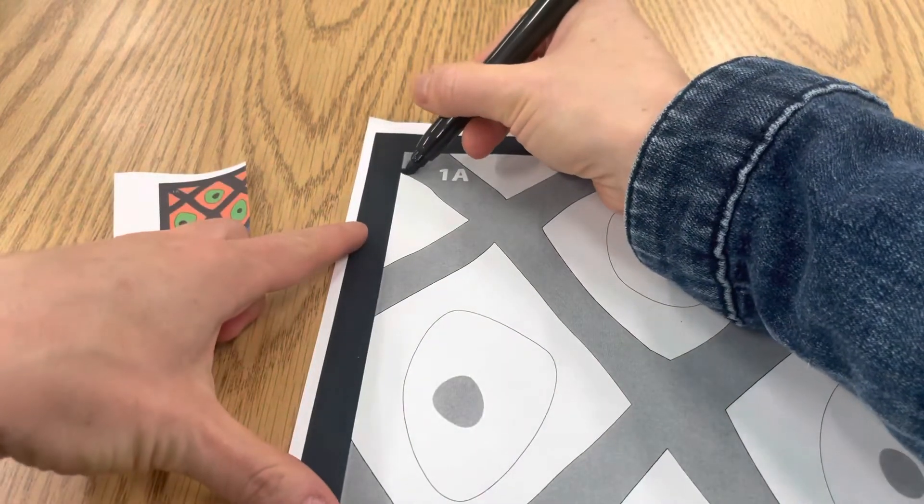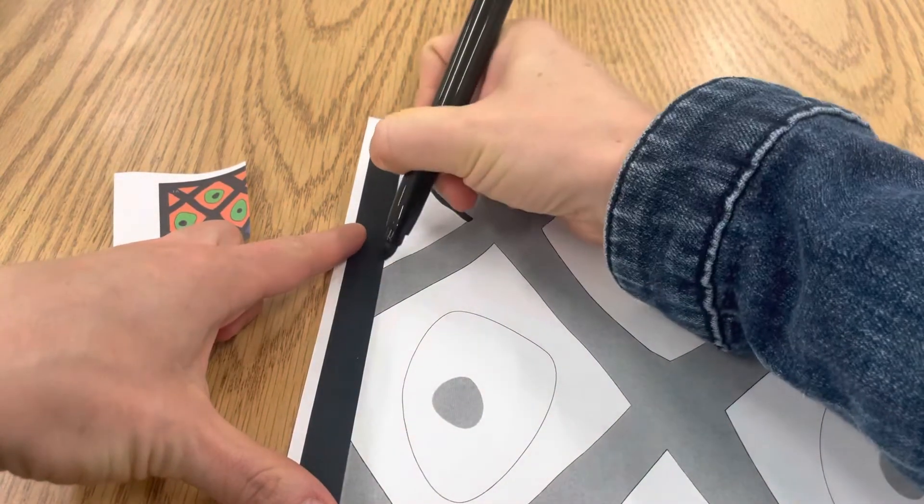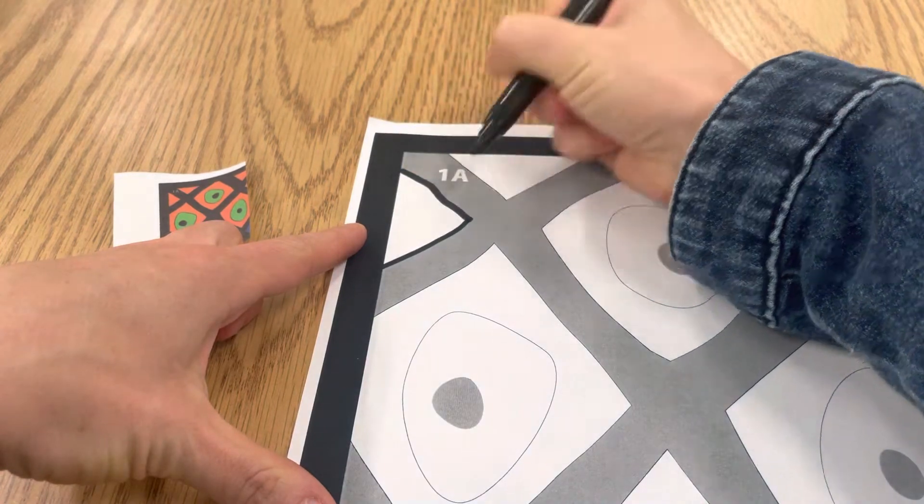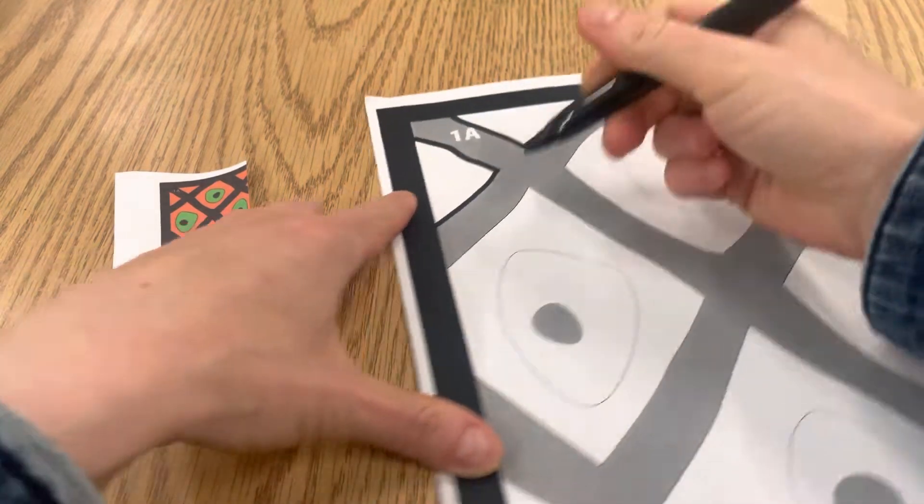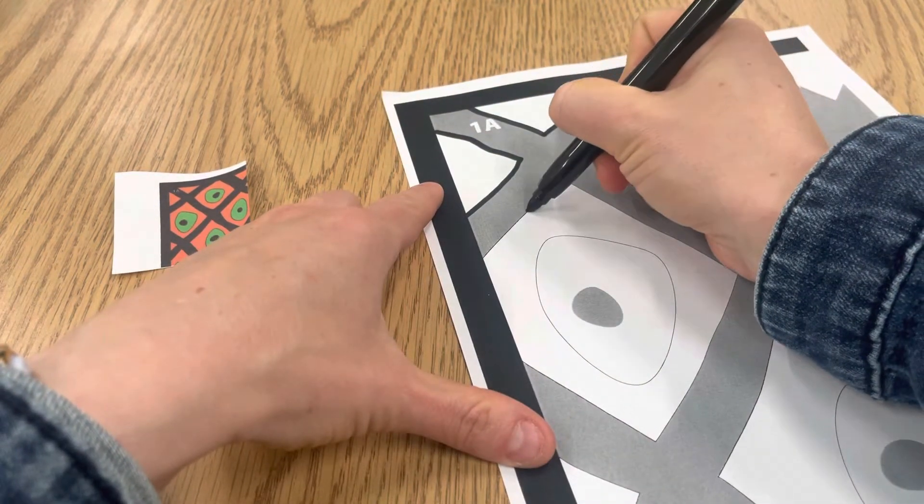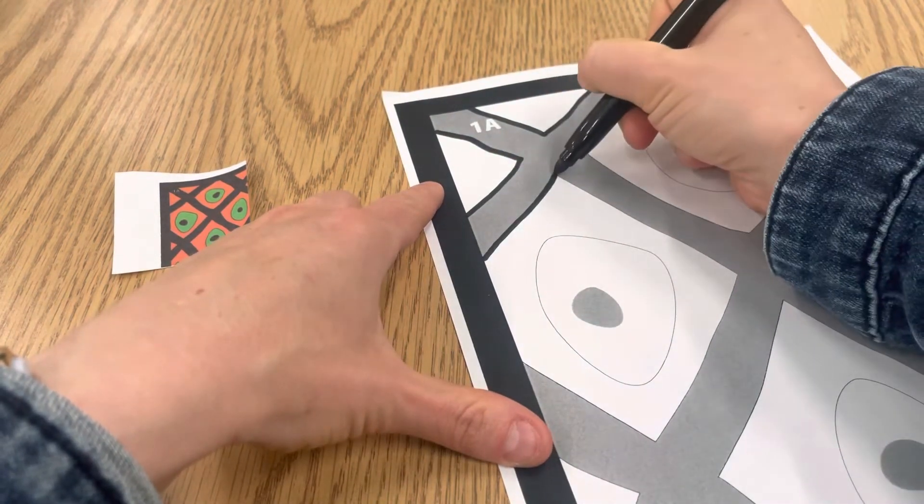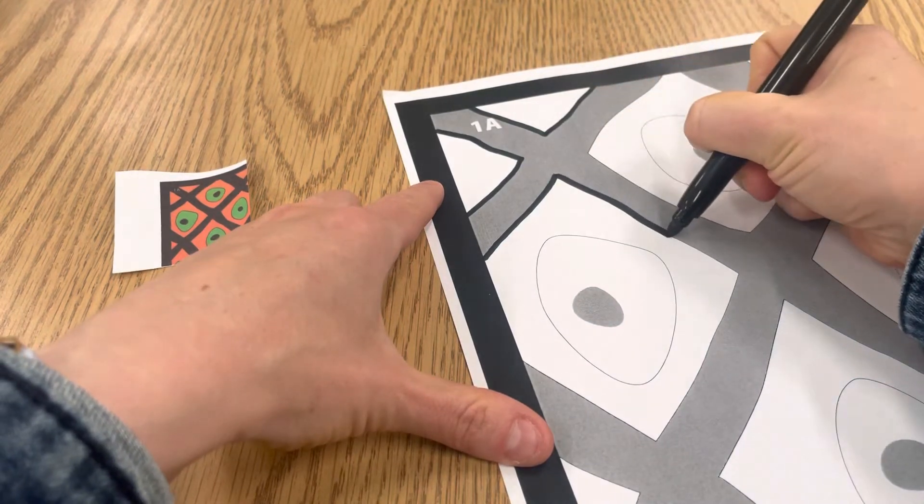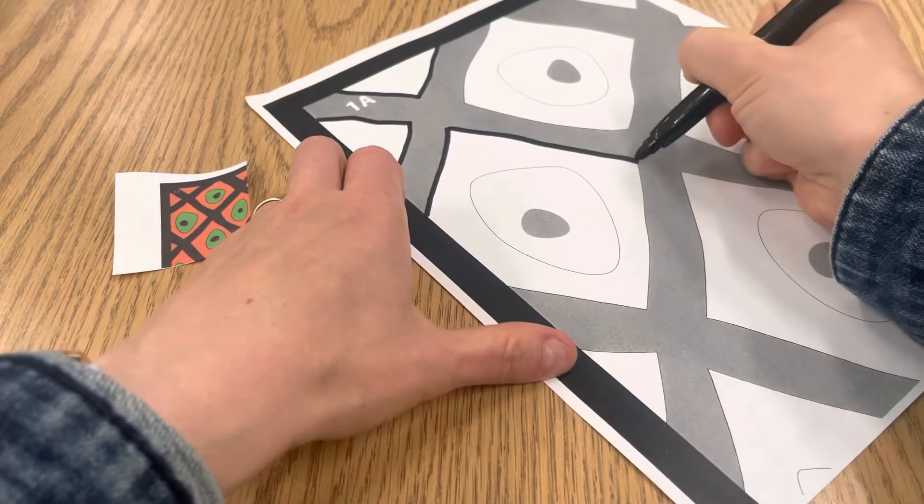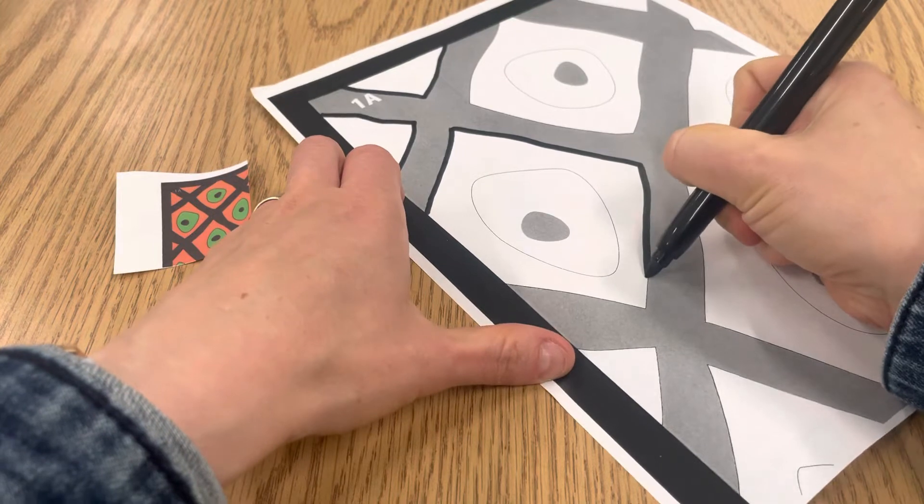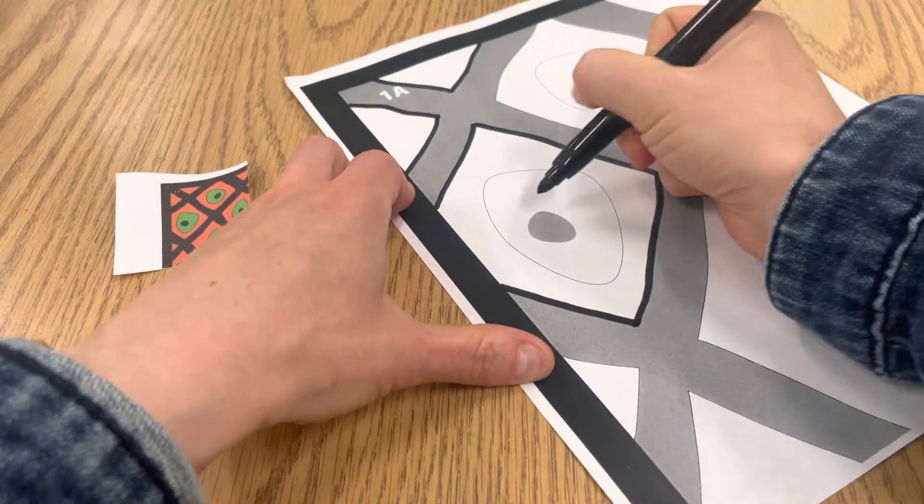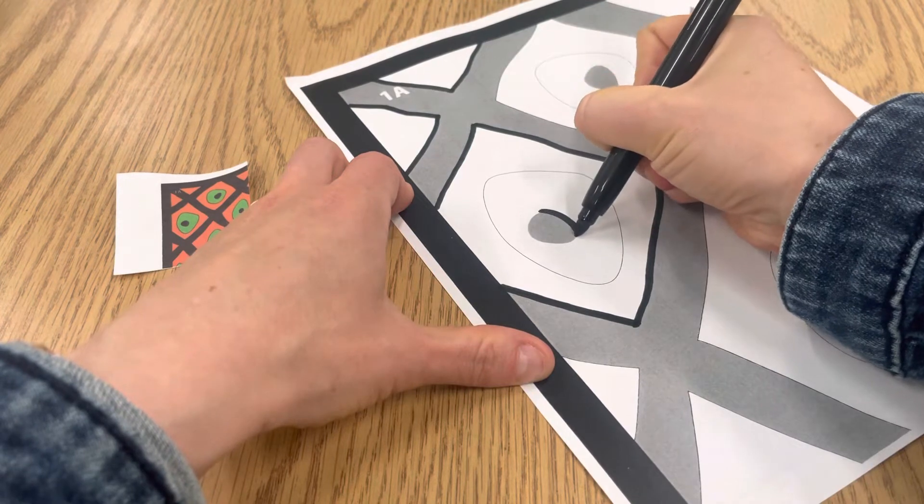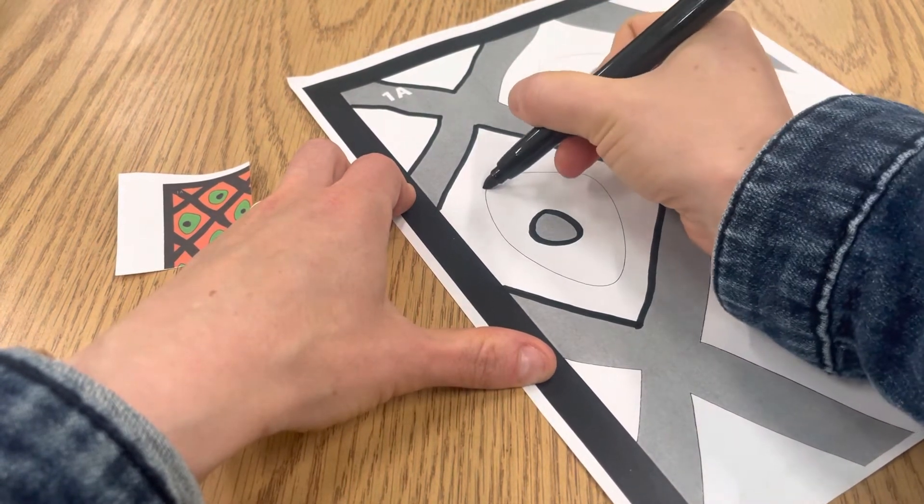All of the edges, all the black lines, just like this with your marker. Take your time and do all of the outlines. You're outlining all the shapes, all the lines.